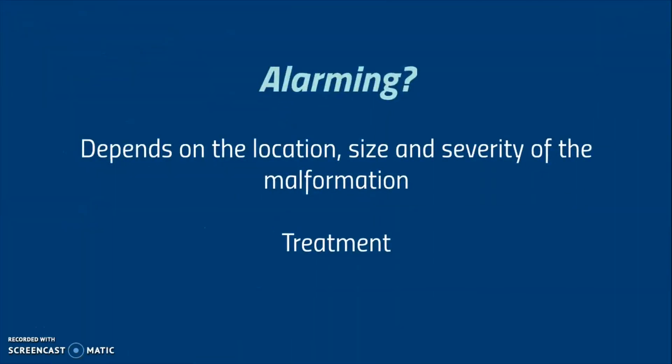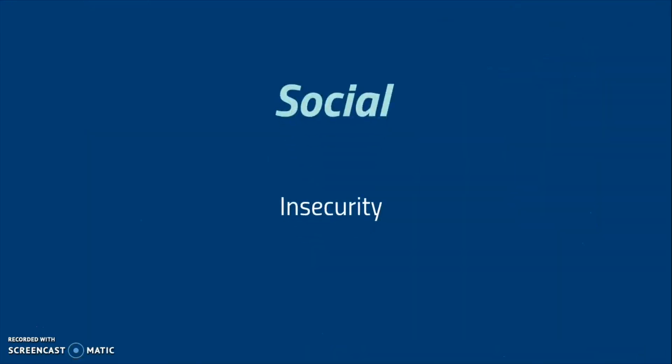A lymphatic malformation does not have to cause any major problems at all. As mentioned before, the seriousness of the condition varies between patients. In most cases, fortunately, people can cope with the condition. However, the malformation can cause difficulties when it is located near vital, delicate areas in the body. This depends on the size and severity of the malformation, and is often an urgent reason for treatment. It can be difficult for a patient to deal with the condition socially, or it can cause insecurity during puberty because of a different appearance. This is, of course, very difficult for the patient, but is often not a reason for therapy.